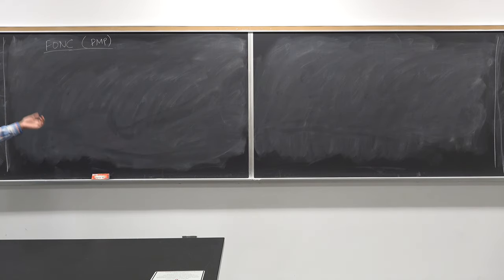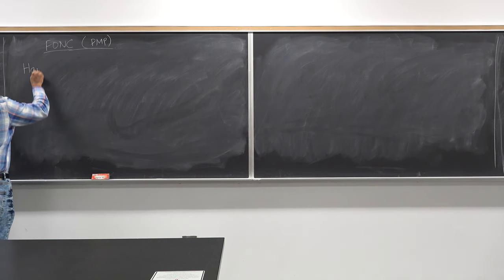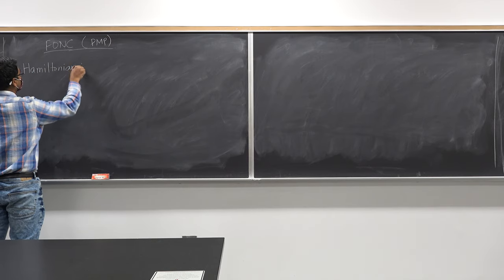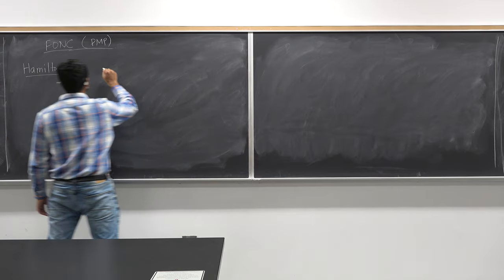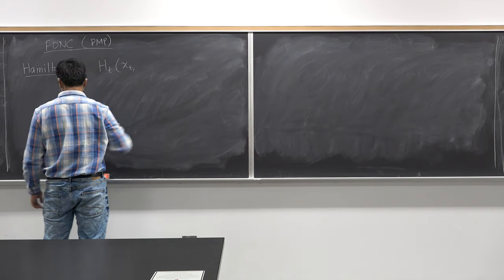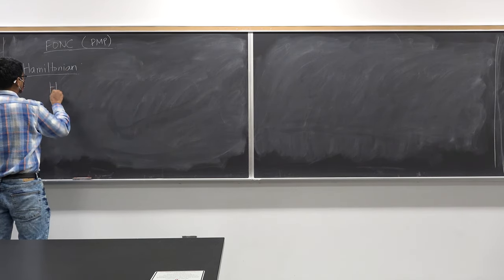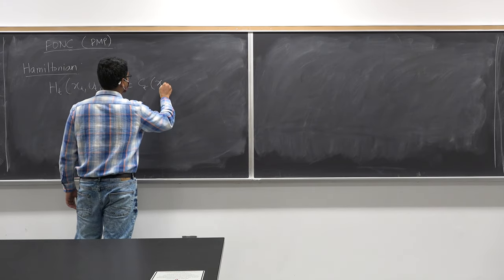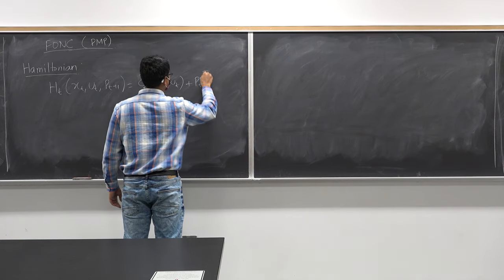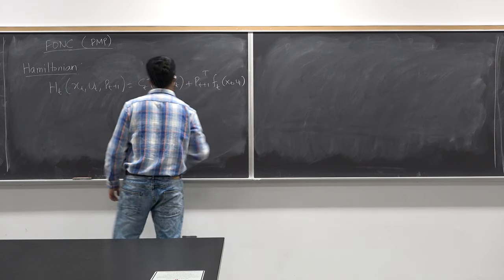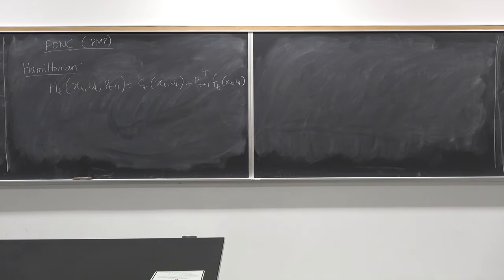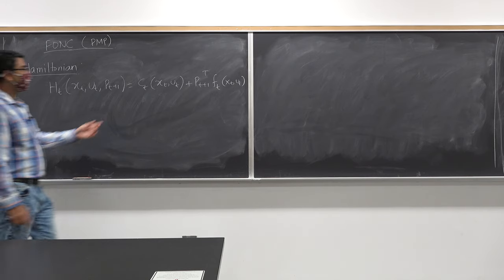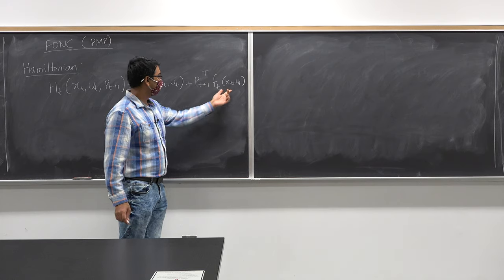We will write the backpropagation algorithm in terms of the Hamiltonian. Here is how you define the Hamiltonian for the system. H of t depends on x_t, u_t, and p_{t+1}, and this is given by c_t of x_t, u_t plus the co-state vector at the next time step multiplied by f_t. This is the running cost at time t.